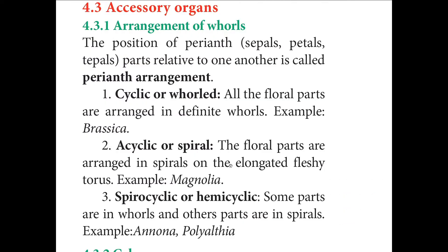Arrangement of accessory organs: Perianth (including petals, sepals, and tepals) may be arranged in a cyclic or acyclic manner. If all floral parts are in definite whorls, it is called cyclic — example: Brassica. If floral whorls are arranged in a spiral manner along the elongated fleshy torus, it is acyclic — example: Magnolia. The third type is hemicyclic — a combination where some parts are in whorls and others in spirals — example: Annona and Polyalthia.